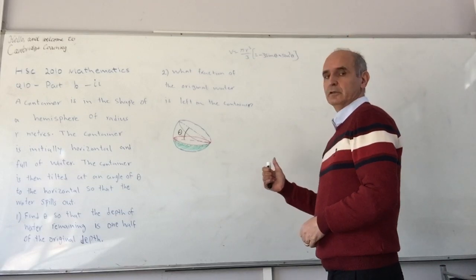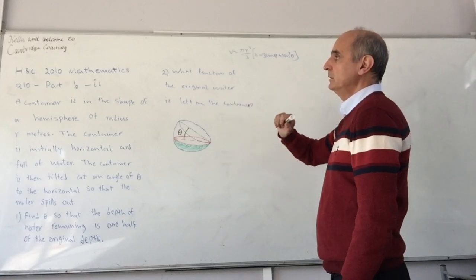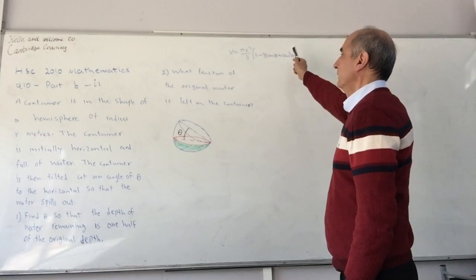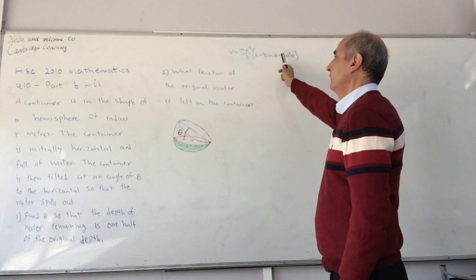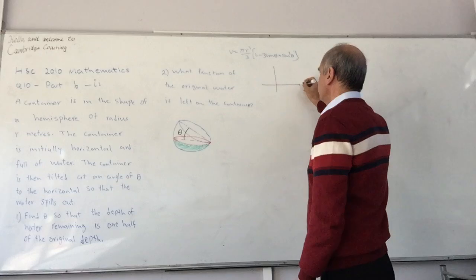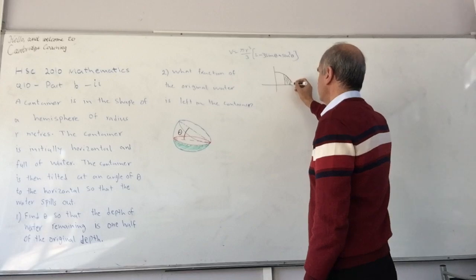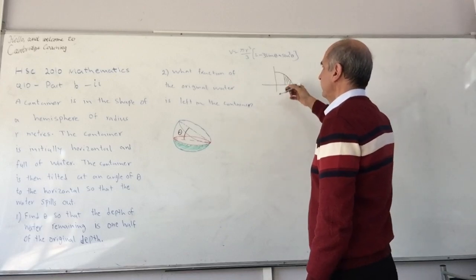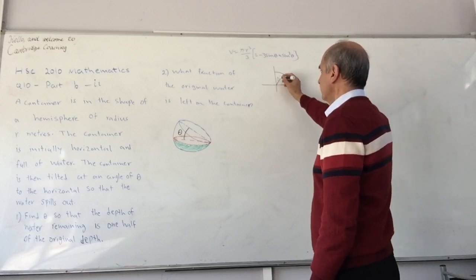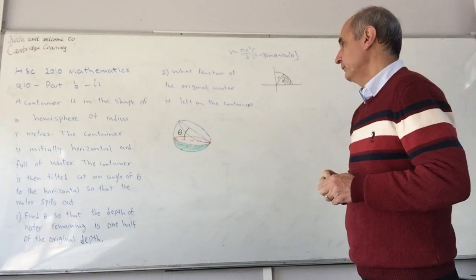For this one, you need to watch the previous video on part BI. Because on that we prove that a certain volume when you have a shape like that, rotating about the y-axis where this angle is theta and this radius of the circle is r will be given by that. So that is from the previous part.